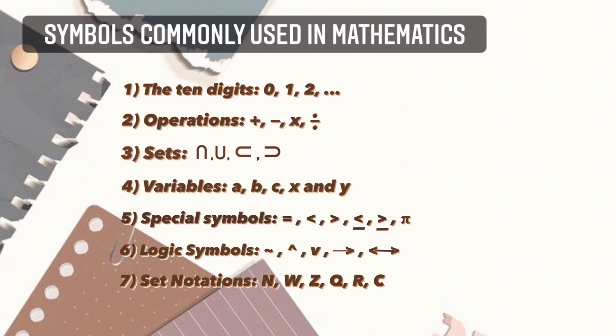Fifth is the special symbols: equals, less than, greater than, less than or equal to, greater than or equal to, pi, and many more.